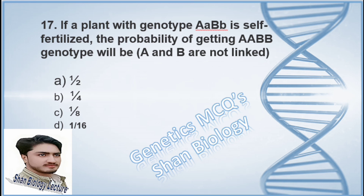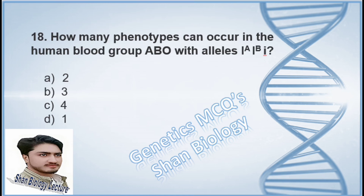Question 17: If a plant with genotype AaBb is self-fertilized, the probability of genotype AABB (where A and B are not linked) is — option A 1/2, option B 1/4, option C 1/8, option D 1/16. The correct option is D, 1/16.